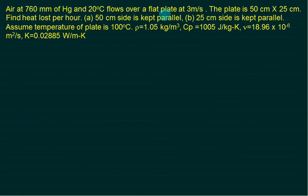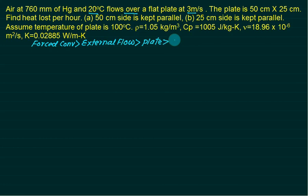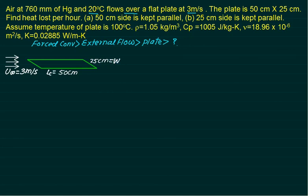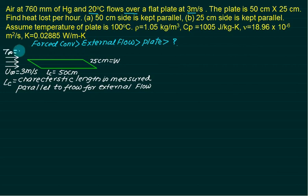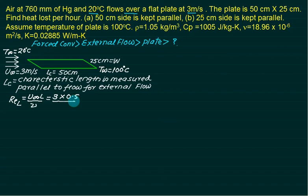Problem 3: Air at 760 mmHg and 20°C flows at 3 m/s over a flat plate (50 cm × 25 cm). Case 1: 50 cm side is parallel to the flow, so L_c = 0.5 m. Re_L = u∞·L / ν = 3 × 0.5 / 18.96×10⁻⁶ = 0.79×10⁵, which is less than the critical Reynolds number of 5×10⁵, so the flow is entirely laminar.